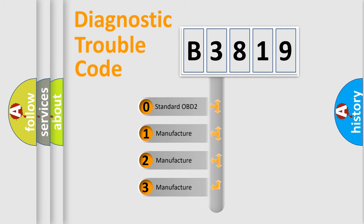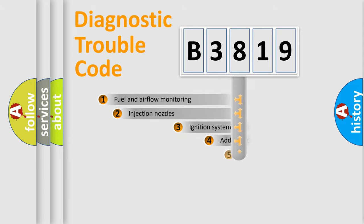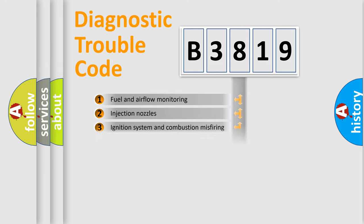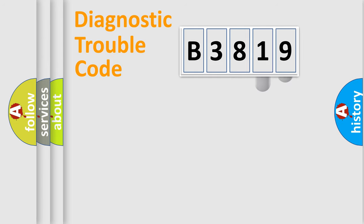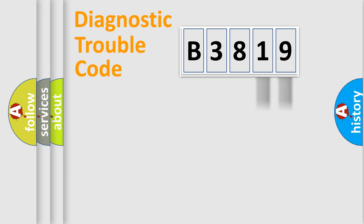If the second character is expressed as zero, it is a standardized error. In the case of numbers 1, 2, or 3, it is a more specific expression of the car-specific error. The third character specifies a subset of errors. The distribution shown is valid only for the standardized DTC code. Only the last two characters define the specific fault of the group.